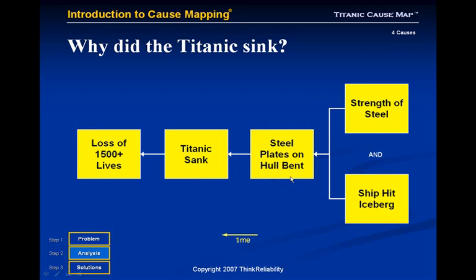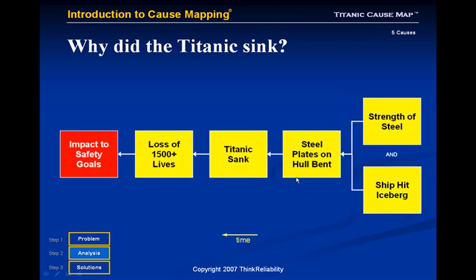If we continue to build the cause and effect relationships with the effect on the left and the cause on the right, the effect of the Titanic sinking is the loss of over 1,500 lives. The fatalities on the Titanic clearly impact the safety goal. The safety goal in any organization is zero injuries. Anytime you deviate from zero injuries, the safety goal has been impacted. On the Titanic, this red box signifies the impact to the safety goal has occurred because there were 1,500 fatalities.